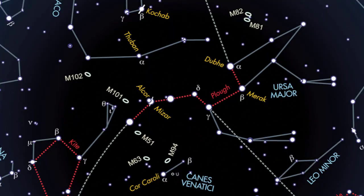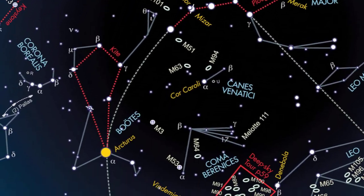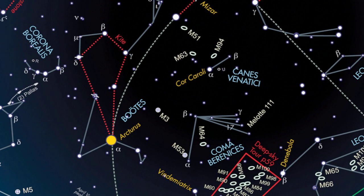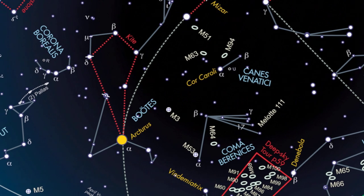First, find the Plough in Ursa Major, then trace the Plough's handle towards the star Arcturus in Boötes. From there, you'll find the constellation of Serpens Caput a little further to the east.